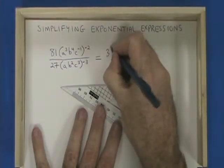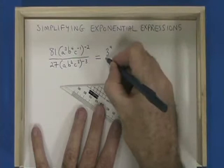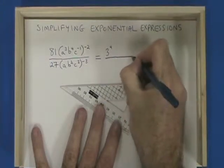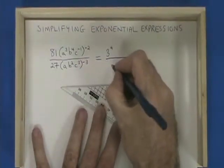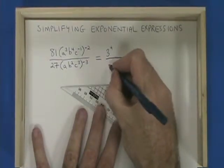81 is 3 to the power of 4. And 27 is 3 to the power of 3.